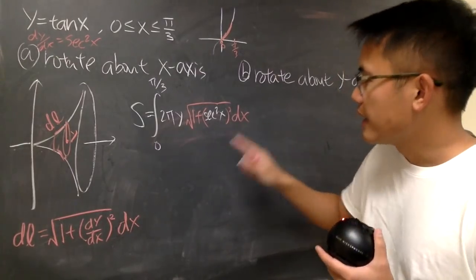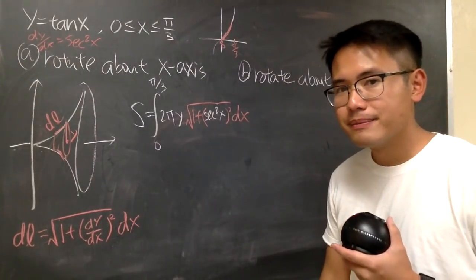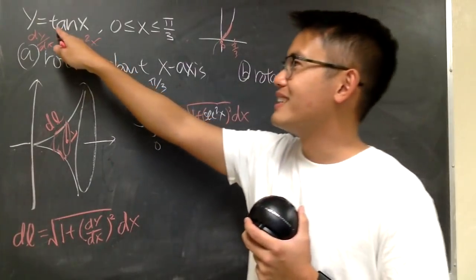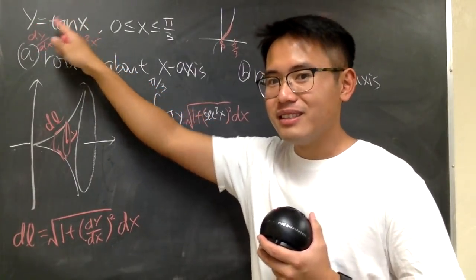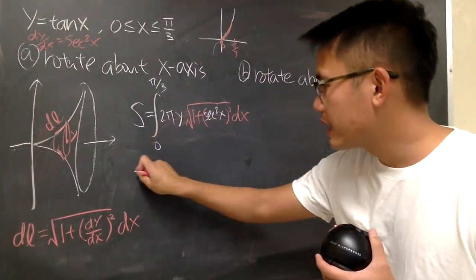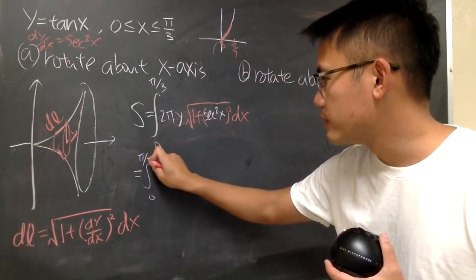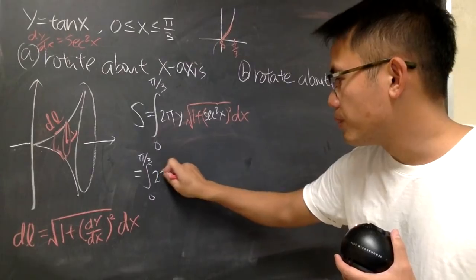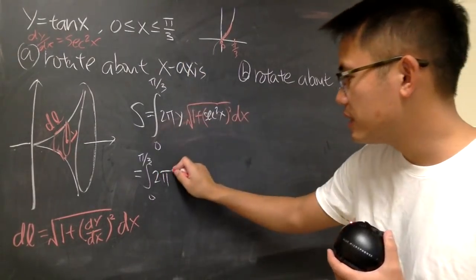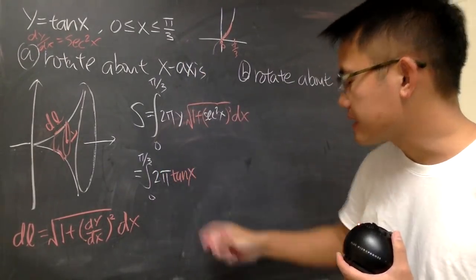Unfortunately, in the x world, the y is not invited. That's okay, don't give up, because right here it says tangent x is the y. So I can write this down for you guys. Integral from 0 to pi over 3, 2 pi y is tangent x.